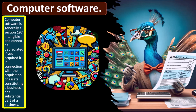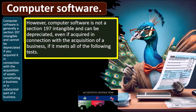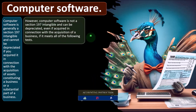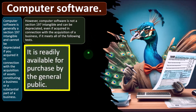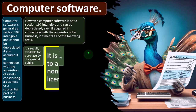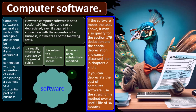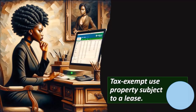Computer software is generally a Section 197 intangible and cannot be depreciated if you acquire it in connection with the acquisition of assets consisting of a business or a substantial part of a business. However, computer software is not a Section 197 intangible and can be depreciated even if acquired in connection with the acquisition of a business if it meets all of the following tests: it is readily available for purchase by the general public; it is subject to a non-exclusive license; it has not been substantially modified. If the software meets those tests, it may also qualify for the Section 179 deduction and the special depreciation allowance. If you can depreciate computer software, use the straight-line method over a useful life of 36 months.